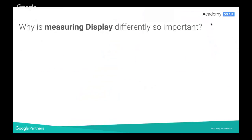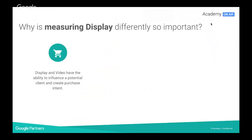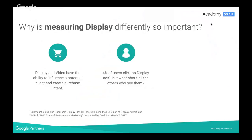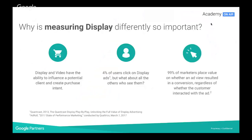When measuring display, it's very different because search and display cover different areas and we need to place different expectations. Display and video have the ability to influence a potential client and create purchase intent, but we might not see conversions based on the back of that — people may see a display ad and then convert on search or organically. From a data perspective, only 4% of users click on display ads. So how can we take into account all the other people that do see them? That's something we need to consider.